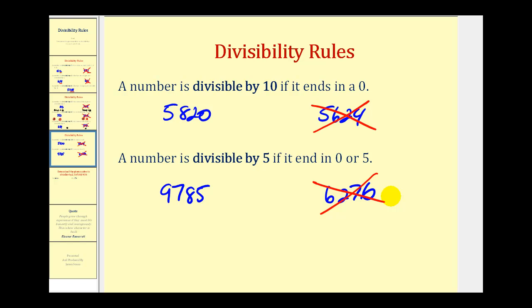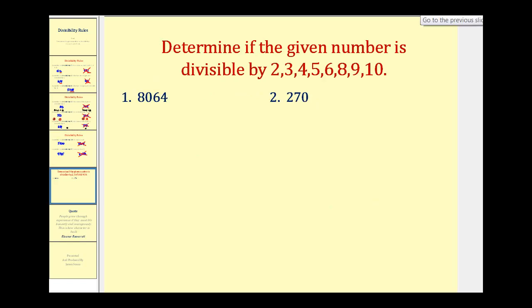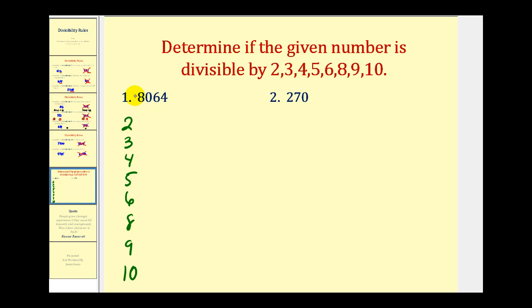Now let's go ahead and take a look at a couple more problems. Here we want to determine if the given numbers are divisible by 2, 3, 4, 5, 6, 8, 9, and 10 — going through all of these rules for an individual number. The rule for 2 is it has to be an even number or end in 0, 2, 4, 6, or 8, and it does — it ends in a 4, so it is divisible by 2.